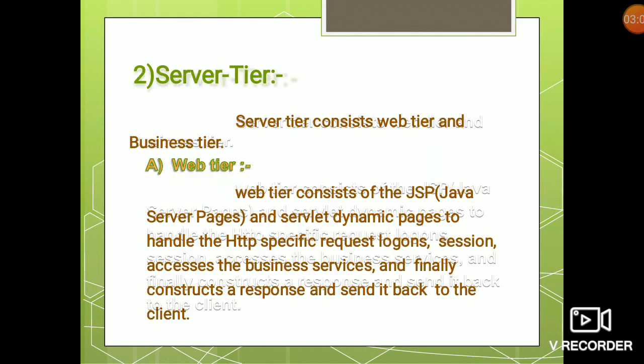The second is server tier, which consists of web tier and business tier. Web tier consists of JSP (Java Server Pages) and servlet dynamic pages to handle HTTP-specific requests, log on associations, and access the business services, and finally construct a response and send it back to the client.